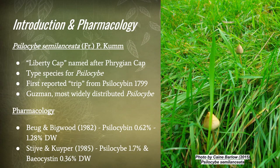Psilocybe semilanceata is commonly known as the Liberty Cap. It's named after the Phrygian Cap, which was a symbol of liberty and freedom around the time of the French Revolution. The history of the Phrygian Cap does go back further in time and it's a really lovely story to read about.